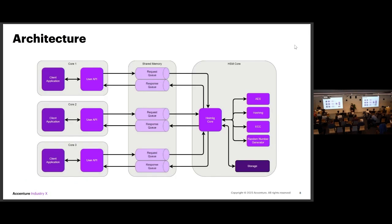The whole thing looks like this. You have your clients on the very left-hand side, and they talk to a user API. The user API creates requests and puts them into shared memory. Then we're going to the HSM core, where the Heimlich core schedules its workers. It also manages all the keys that might be necessary for a crypto operation. Then it sends the response back to the response queue, back to the user API, back to the client. The shared memory in between is what we usually see on hardware, but it's strictly speaking not even necessary — Heimlich doesn't care as long as there is a request and response queue interface provided by the integrator.